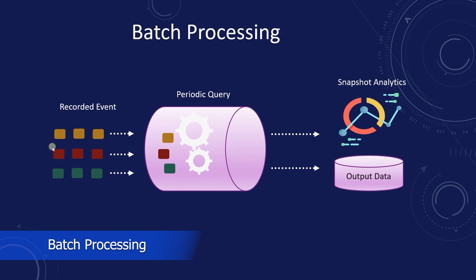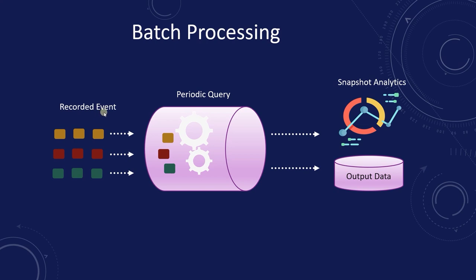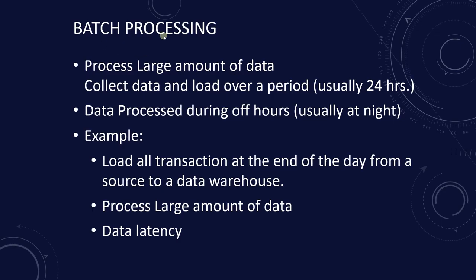In batch processing, we process all the data — be it customers and their transactions, products and their details — together. We link all tables and process all the data at the end of the day. Batch processing is an efficient way to process large amounts of data collected over a period of time, in this scenario 24 hours. Data is processed during offline hours, giving data engineers complete control as to when to start the processing, which usually happens overnight.